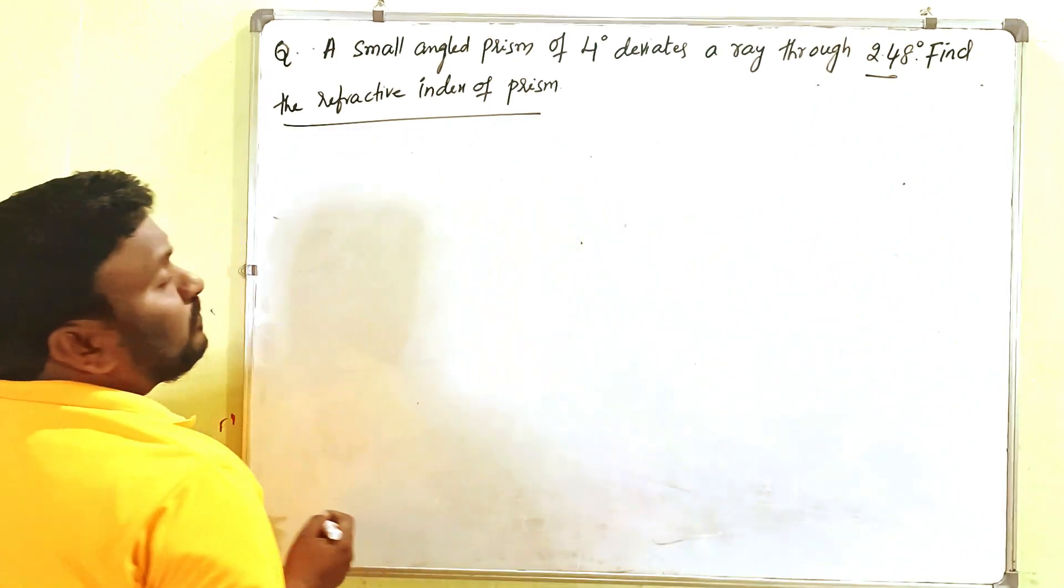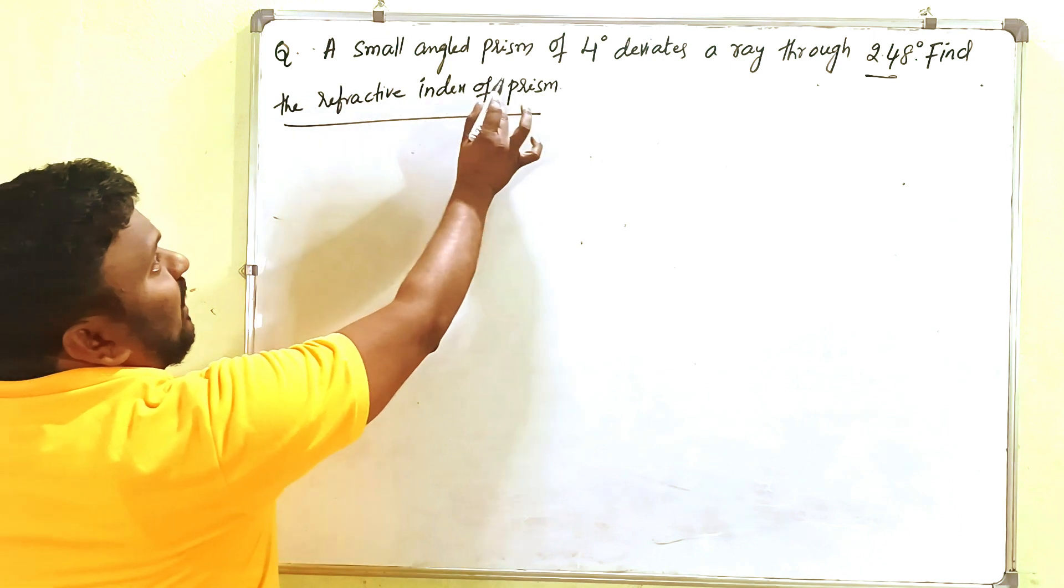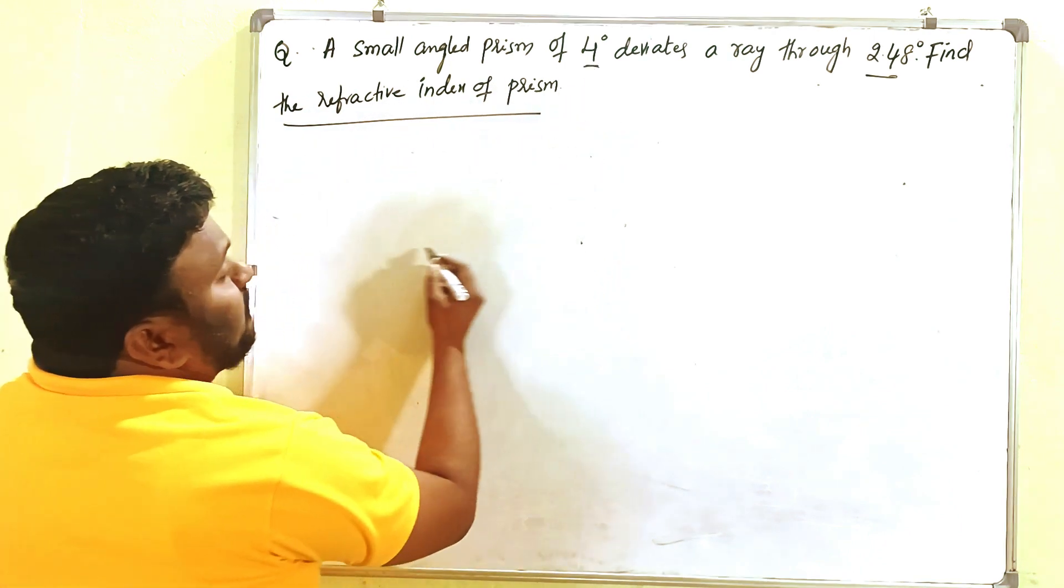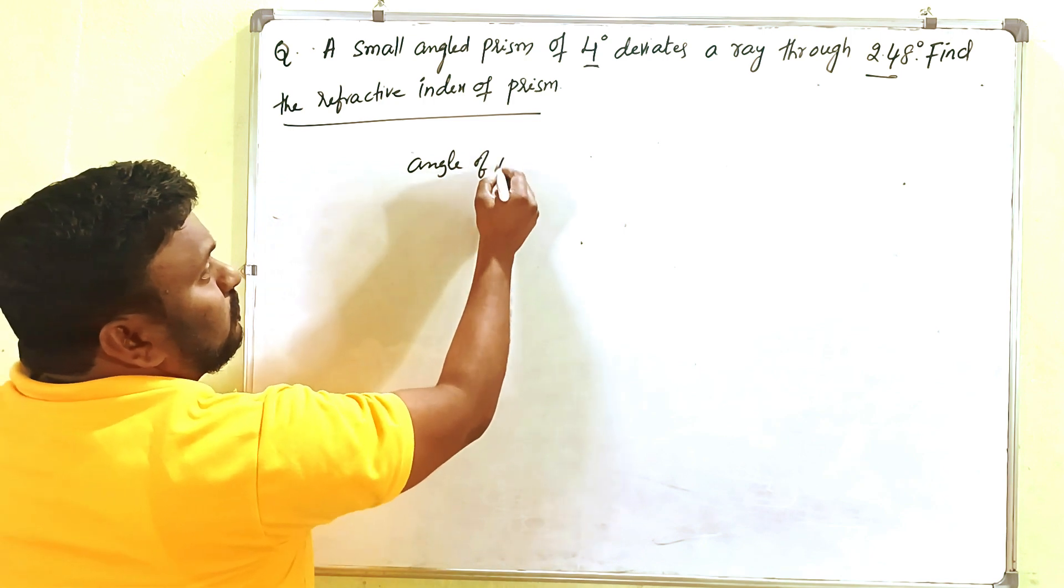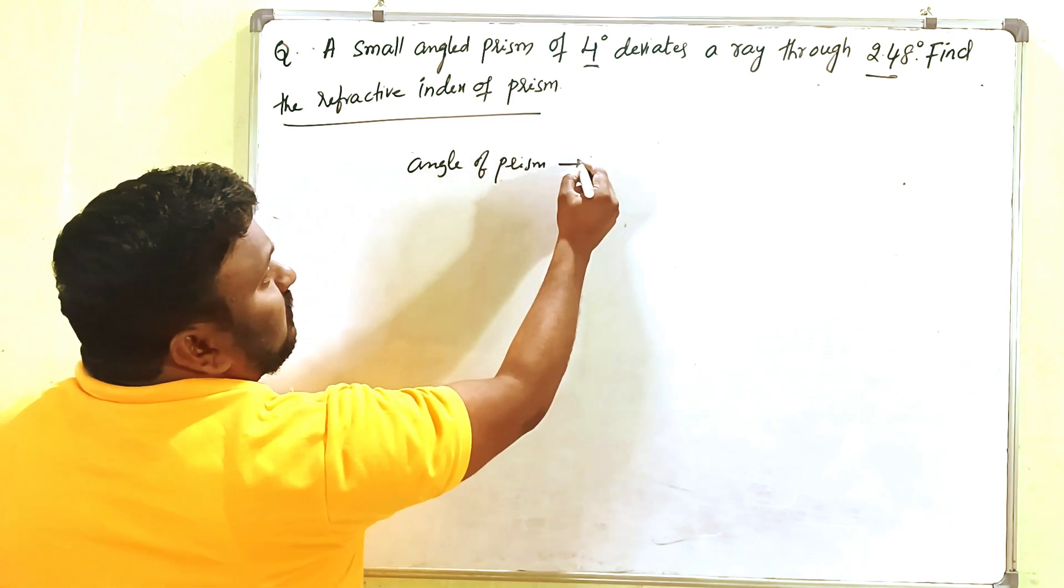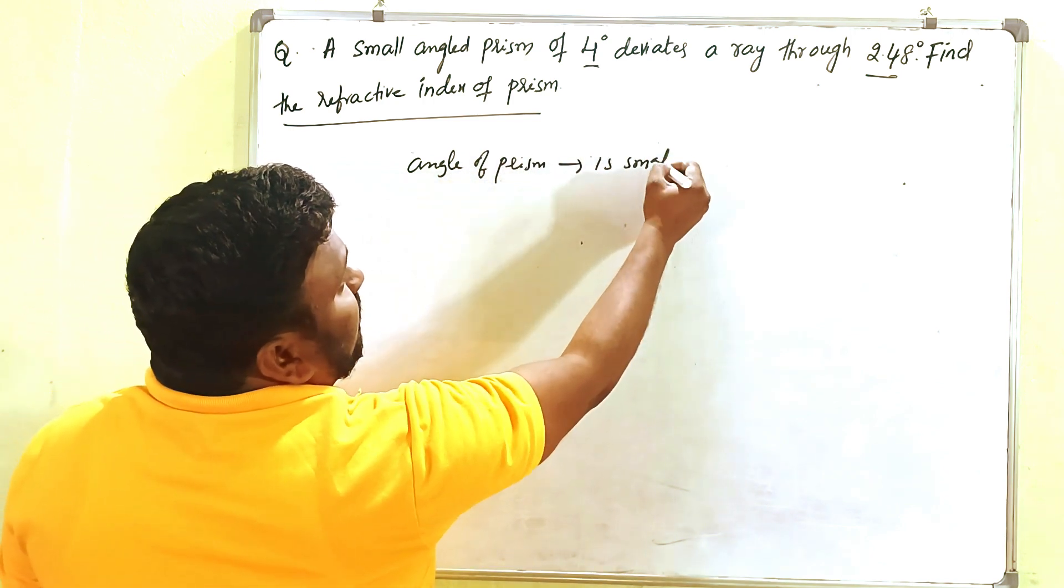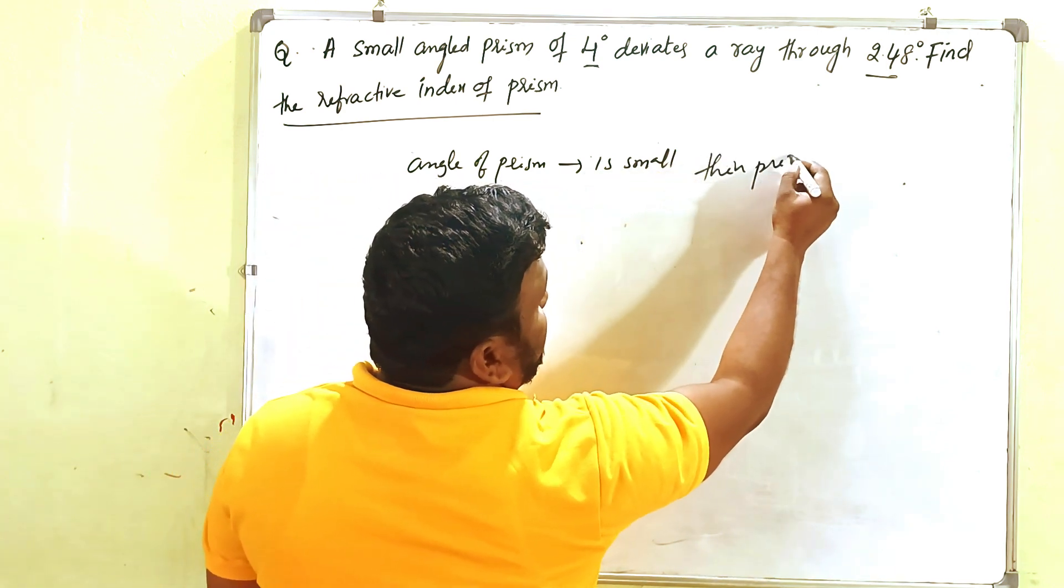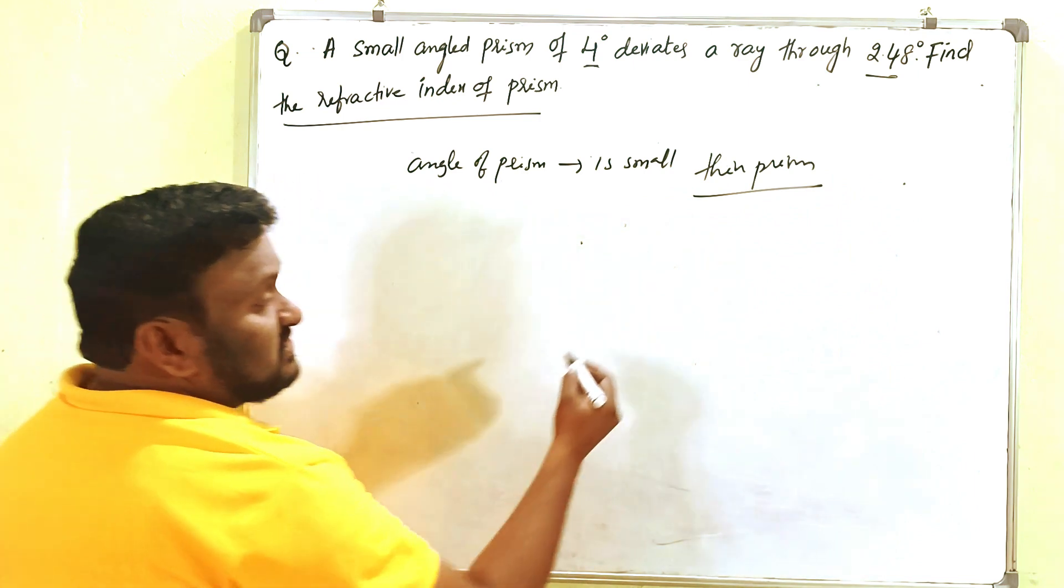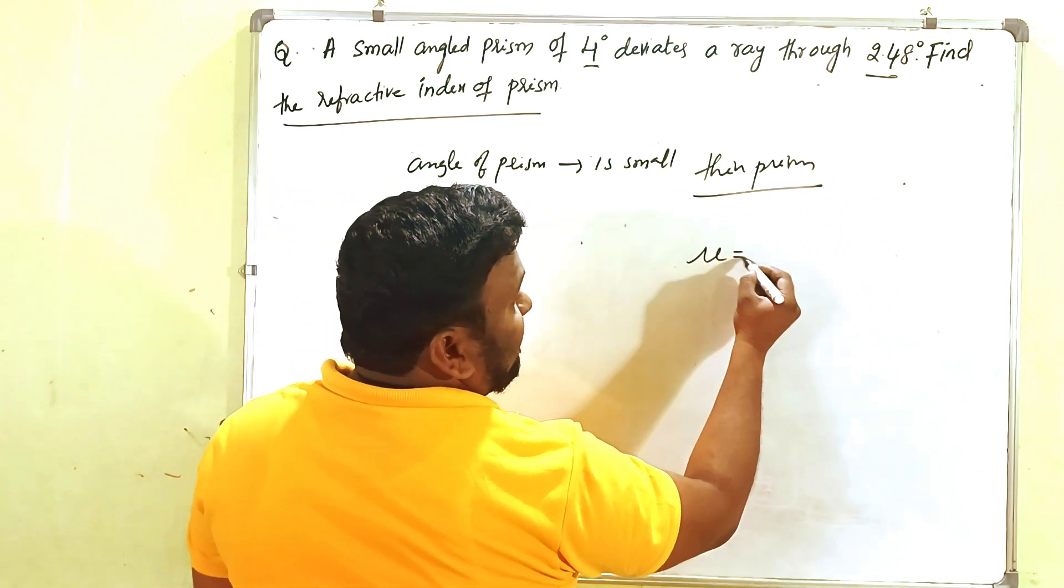When the angle of prism is small, you can take it as a thin prism. For a thin prism, the formula is: refractive index mu equals (A plus delta) by 2, divided by A by 2. This is the formula.